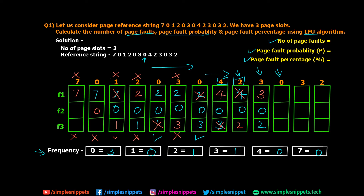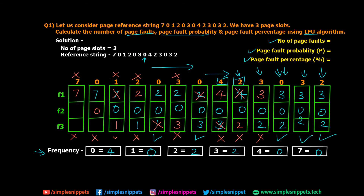Eleventh step: page 0 is requested. Page 0 is already in memory — not a page fault. Pages are 3, 0, 2. Frequency of 0 is incremented from 3 to 4. Twelfth step: page 3 is requested. Page 3 is already there — not a page fault. Pages remain 3, 0, 2; frequency of 3 is incremented from 1 to 2. Thirteenth step: page 2 is requested. Page 2 is also there — not a page fault. Pages stay 3, 0, 2; frequency of 2 is incremented from 1 to 2.